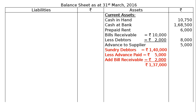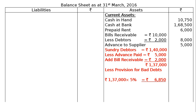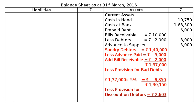The dishonoured bills receivable of rupees 2,000 returned by the bank — it increases the value of debtors because the bill was dishonoured, and bills receivable account is reduced by rupees 2,000 while sundry debtors increase by rupees 2,000. Total debtors rupees 1,37,000. Less provision for bad debts: rupees 1,37,000 into 5 percent equals rupees 6,850. After deduction: rupees 1,30,150. Less provision for discount on debtors: 2 percent of rupees 1,30,150 equals rupees 2,603. Final column: rupees 1,27,547.